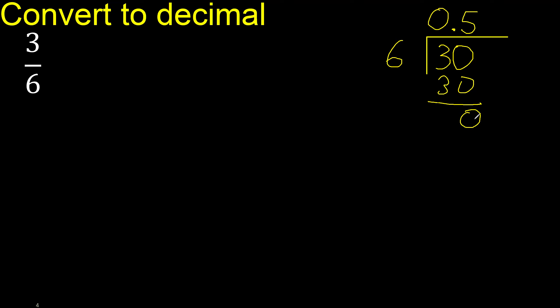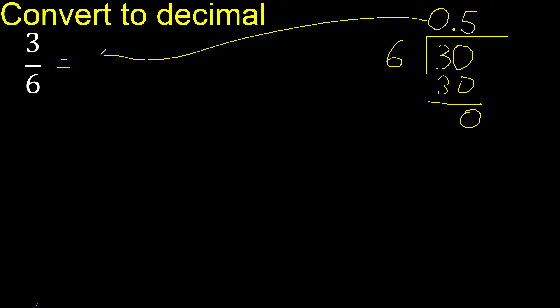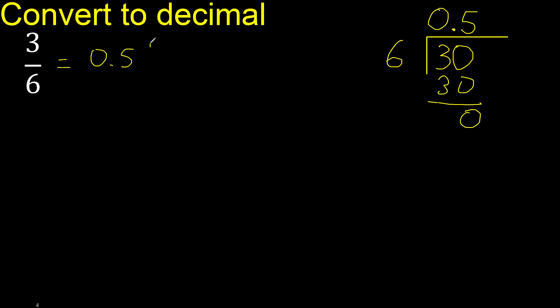30 minus 30 is 0, and there is no number that goes down, therefore we finish. The result is 0.5.